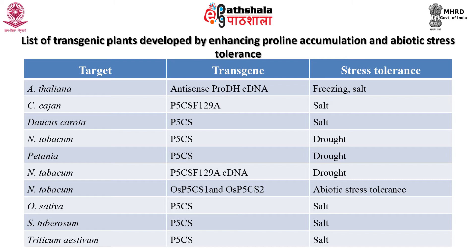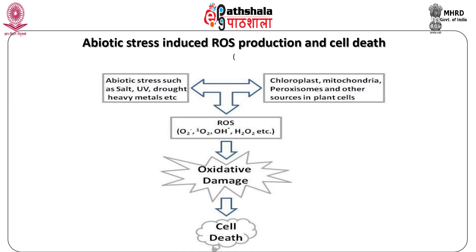Proline is known to increase during abiotic stresses as compared to normal conditions. This is due to induction of proline biosynthesis genes by signaling molecules such as ABA and calcium-mediated phospholipase D, and also due to the presence of stress-responsive cis-elements in proline biosynthesis pathway genes. Here is the list of transgenic plants developed by enhancing proline accumulation for abiotic stress tolerance.